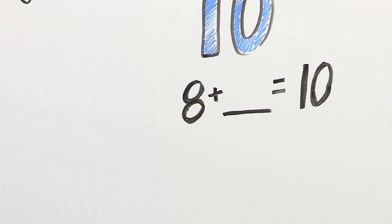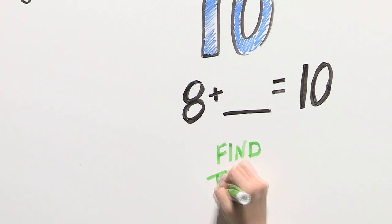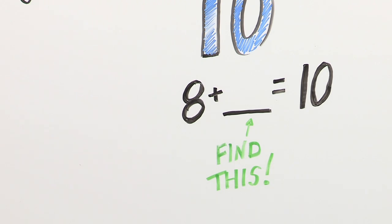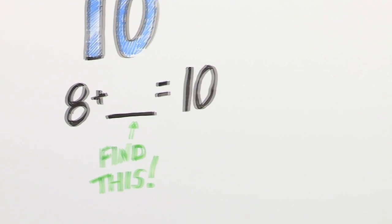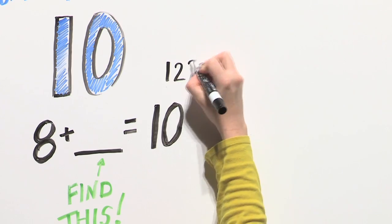In kindergarten, your child will find the hidden number that makes 10. Your child will be asked to do this for any number from 1 through 9.